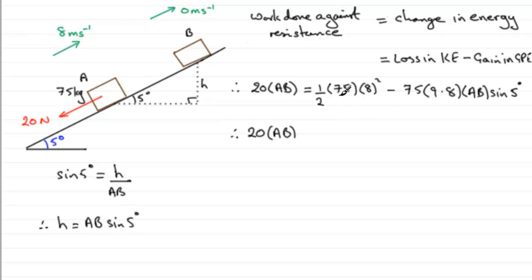And if we work out this term here, that will be, what will that come to, half of 8 squared is 64, that's 32, 75 times 32, well that ends up as 2,400. You're going to need a calculator for this part, I would have thought, 75 times 9.8 times sine of 5 degrees, that comes out at 64.0594 and so on.